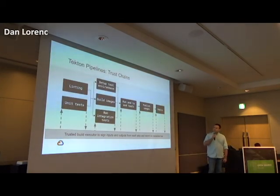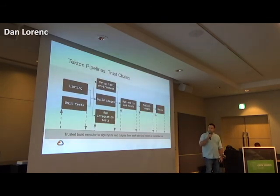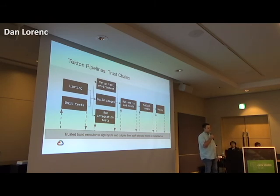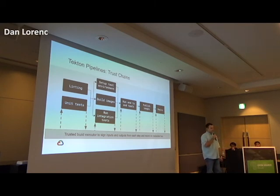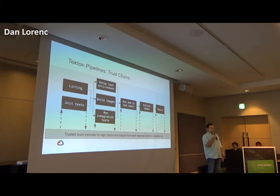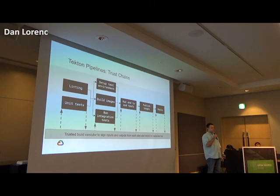Starting with the Tekton project: Tekton Pipelines is a project to let people declaratively specify software delivery pipelines. It's kind of the first standard we talked about. It comes in two parts — there's a way to declare pipelines, and Tekton also provides a trusted execution environment to execute them. Once you've declared everything as sets of containers running in a DAG, we can start writing metadata at every step in a secure manner, using signatures and various techniques to make sure things can't be tampered with.